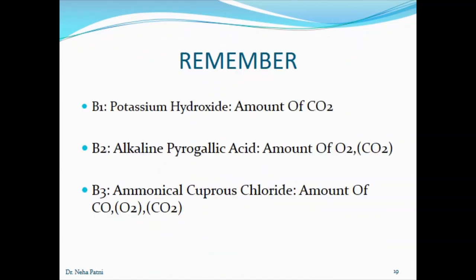For a quick recap — if I change the sequence of passing the flue gas, for example going to B2 or B3 directly, would it work? No, you are supposed to follow the sequence B1, B2, B3. Definitely we have to follow the sequence because if you go directly to the third one — ammoniacal cuprous chloride solution — it absorbs all three gases at once. When three gases are absorbed simultaneously, you cannot identify the individual percentages of each gas. So you need to eliminate them first: CO2 first, followed by O2, and then only CO.